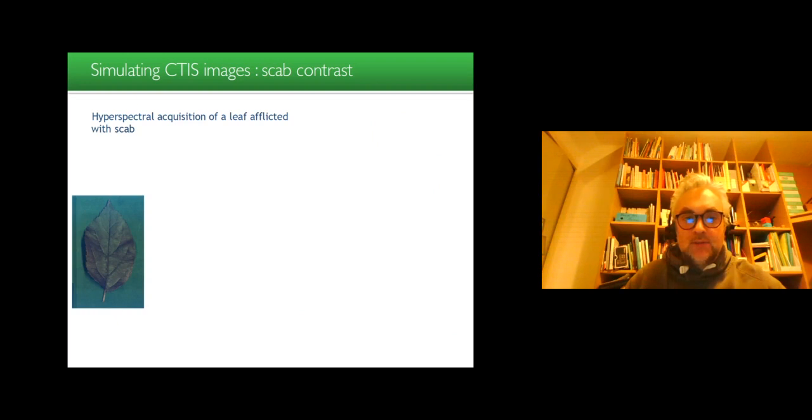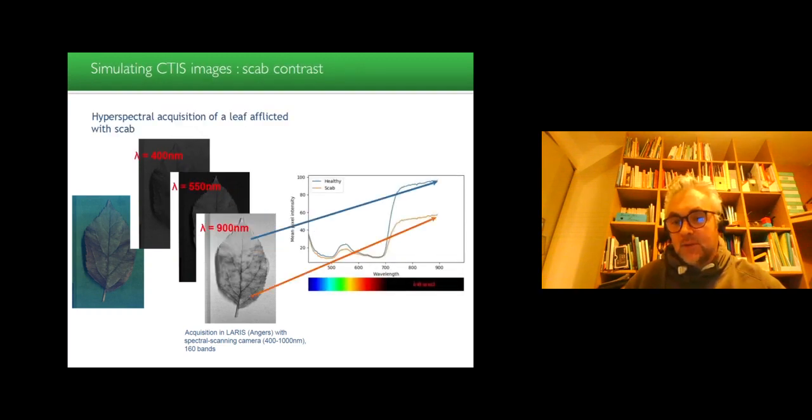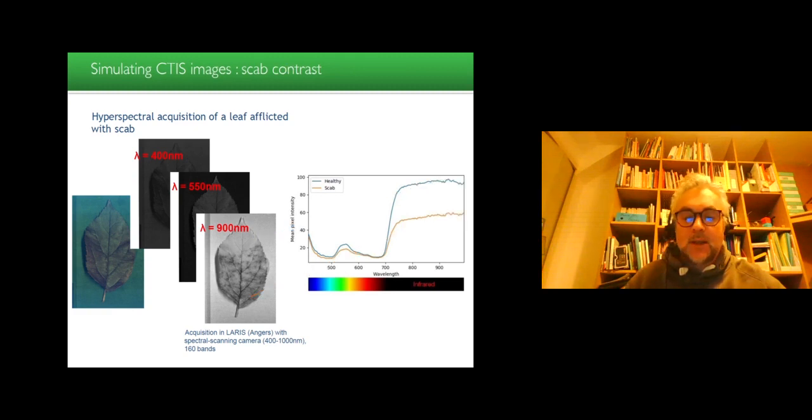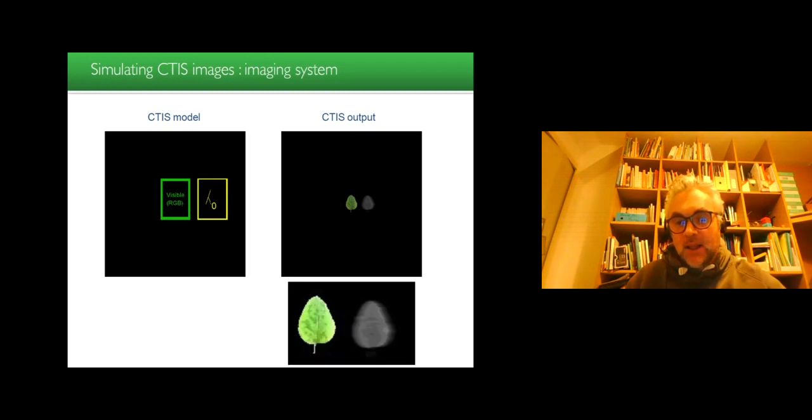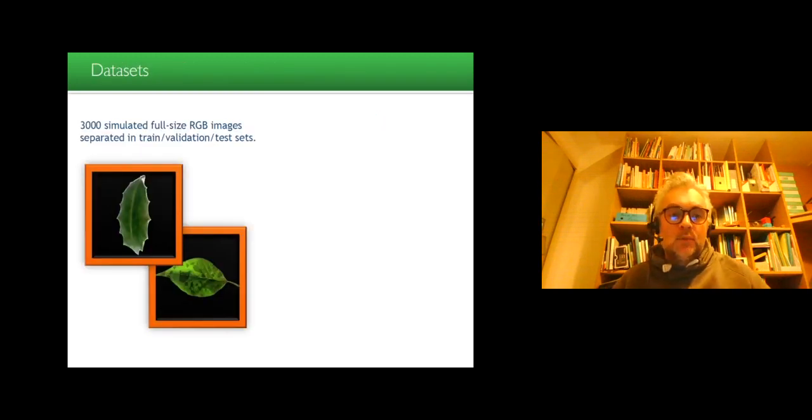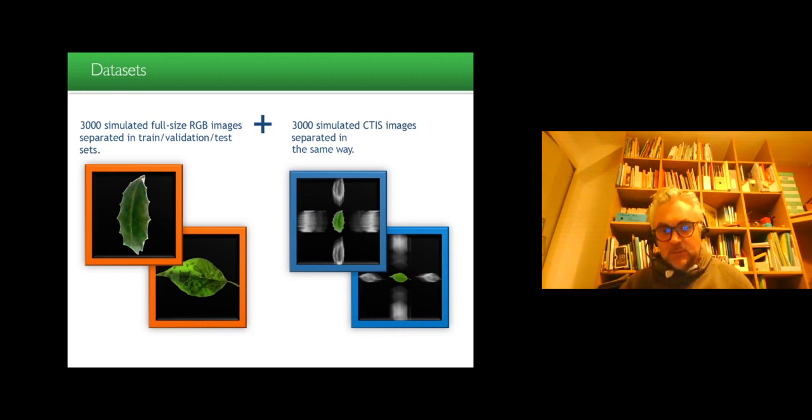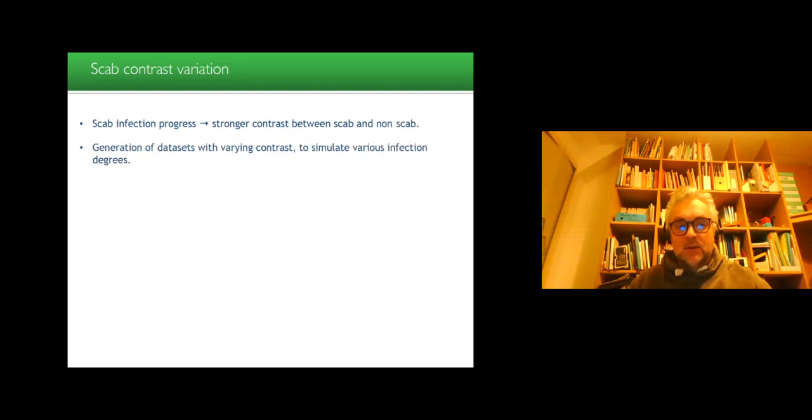So the real acquisition of leaf afflicted with scab gives this kind of hyperspectral cube, where you have for various wavelengths the following spectrum for the healthy and the scab part. Then we model the CETIS by copy-pasting the visible RGB imaging here, and then copy-pasting the various values of the spectrum on the different diffraction patterns. We produce a simulated data set of 3000 images for the full-size RGB images separated in train, validation and test. And we did the same for the CETIS images separated in the same way.